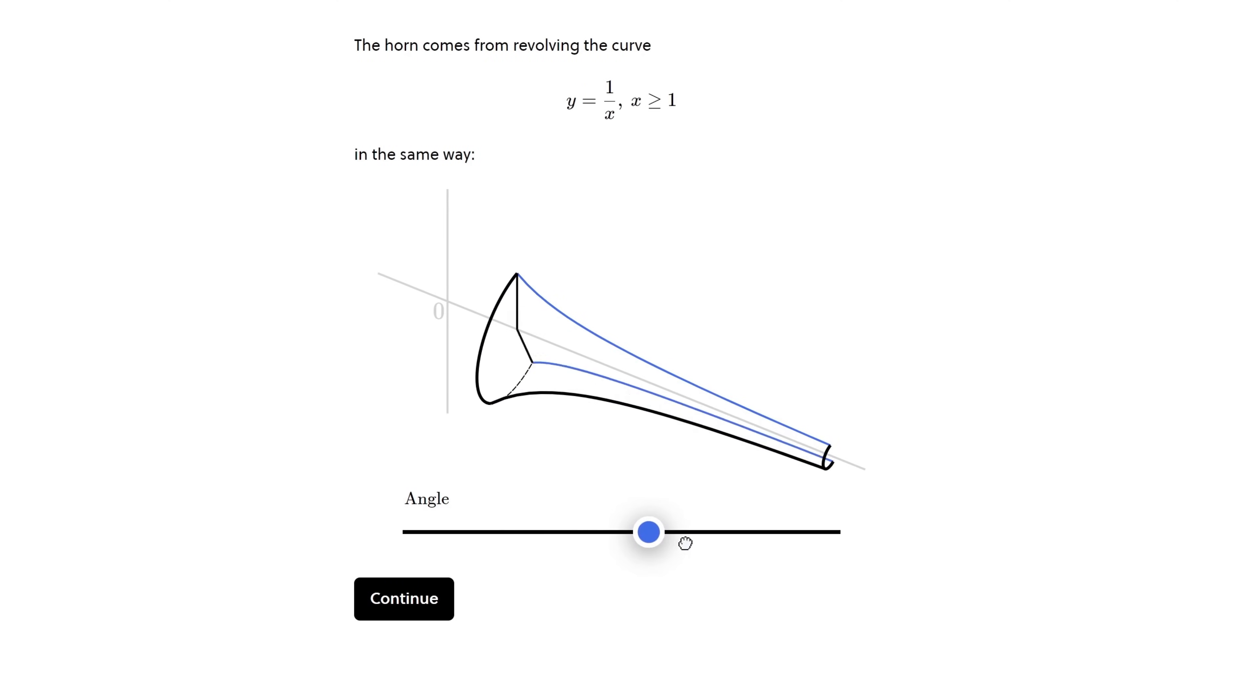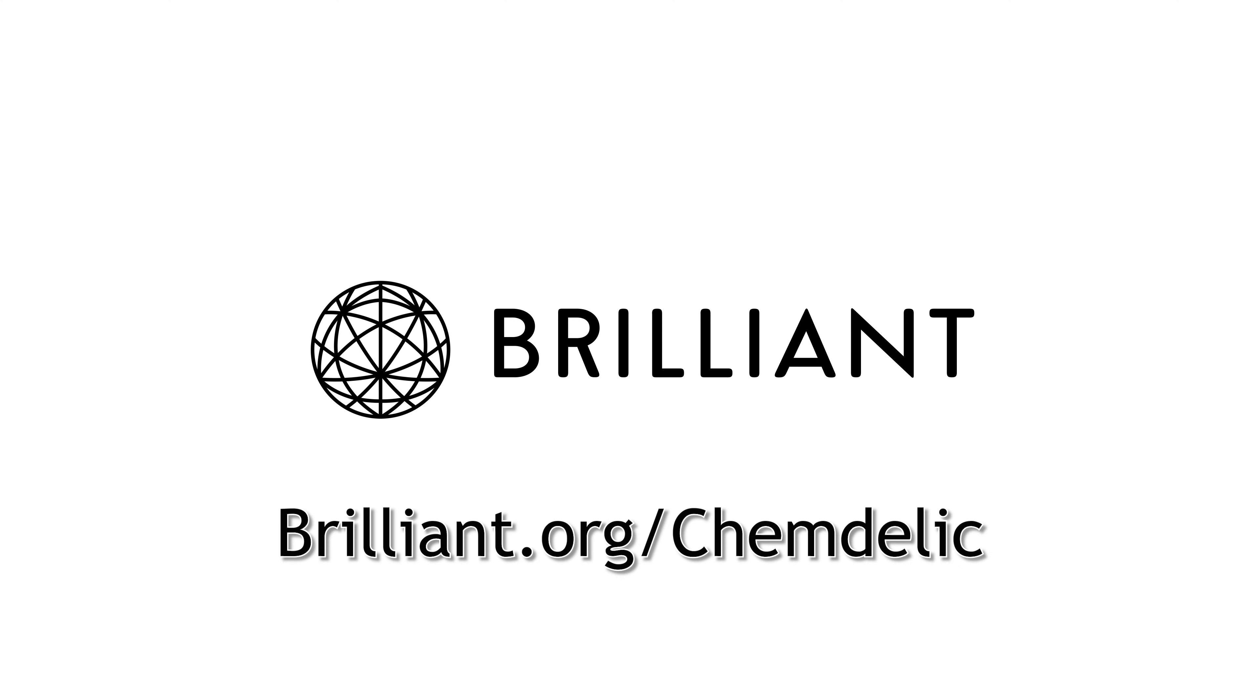To try everything Brilliant has to offer, free, for a full 30 days, visit brilliant.org slash chemdelic, or click the link in the description. The first 200 of you will get 20% off Brilliant's annual premium subscription. This is an insanely good deal, and I really recommend you go click on that link.